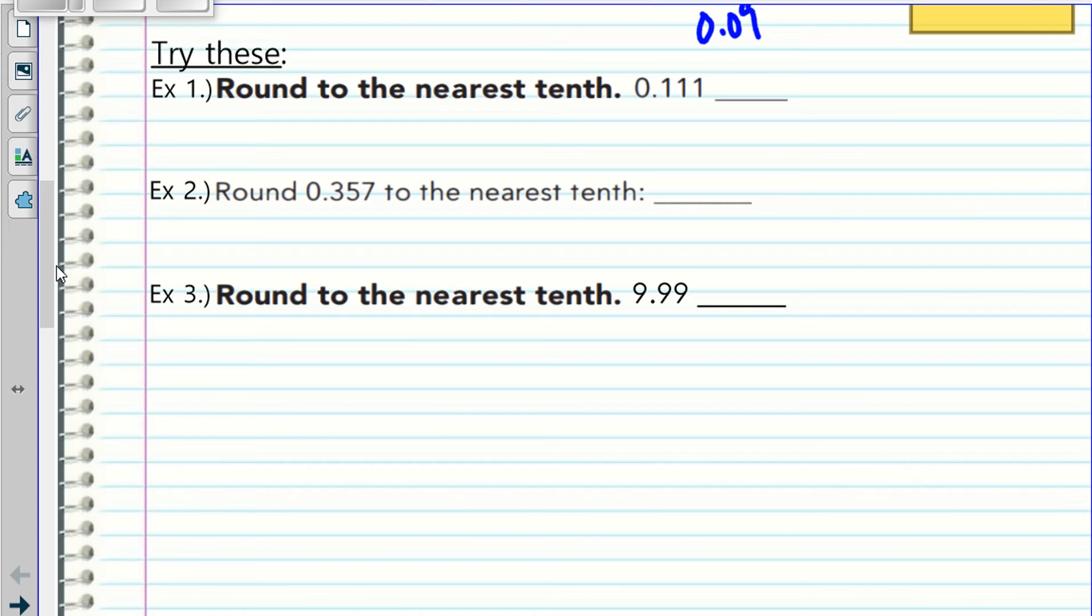And we're back. Look at this, round 0.111 to the nearest tenth. That's tenth, look at the number before, that's a one, so what happens? That's right. Now, you don't round down. There's no rounding down, you stay the same. So 0.1 stays 0.1. Round 0.357 to the nearest tenth. Look at number four, what is that? Five or greater, right? So you got to round it up, so 0.4.